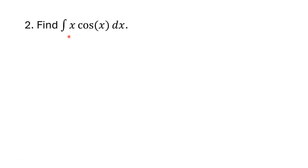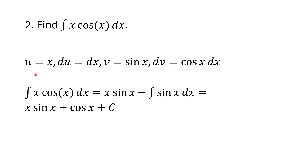Now we're going to find the integral of x·cos(x) dx. We're going to let u = x and dv = cos(x) dx. So du is the derivative of x, which is just dx. And v, going backwards from cosine, gives us sine, since the derivative of sine is cosine. You have to be careful with sines and cosines whether you're dealing with positives and negatives.